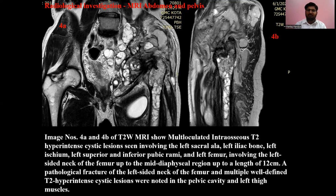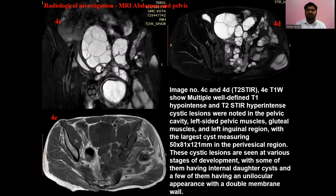A pathological fracture of the left-sided neck of femur and multiple well-defined T2 hyperintense cystic lesions were noted in the pelvic cavity and left thigh muscles. Images 4c and 4d show multiple well-defined T1 and T2 hyperintense cystic lesions in the pelvis cavity, left-sided pelvic muscles, gluteal muscles, and left-side femoral lesion with large cysts measuring 50x81 mm in the pelvis perivisceral area. The cystic lesions were seen at various stages of development with some having internal daughter cysts and others having a unilocular appearance with a double membrane, both indicative of hydatid cysts and daughter hydatid cysts.